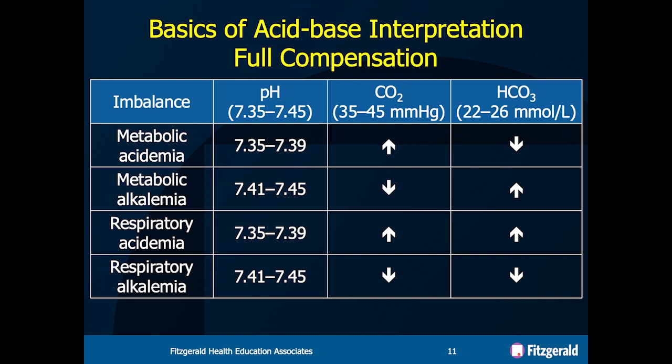When you're looking at these numbers and the pH is normal, but the CO2 and bicarb are off, you have to think to yourself: where did this start? Was this an alkalosis process that fully compensated, or was it an acidosis process that fully compensated?